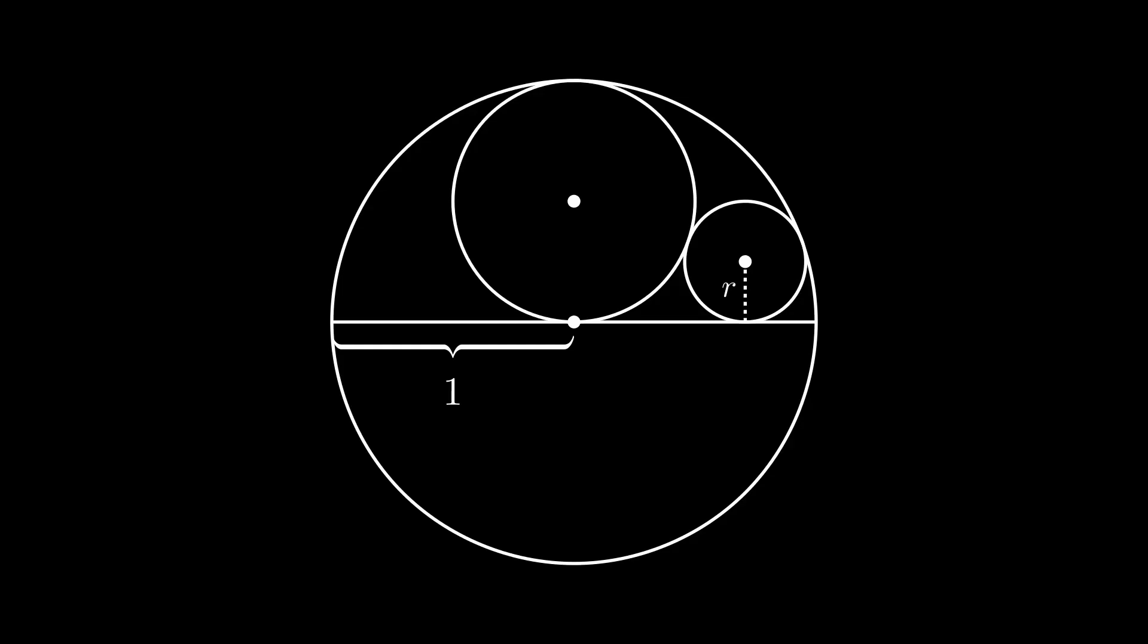One way is to construct the blue triangles as shown here, and use Pythagoras to construct two simultaneous equations. You should find that the two triangles are congruent and therefore the radius is half that of the medium circle, meaning r is a quarter. Let's now show this using inversion.